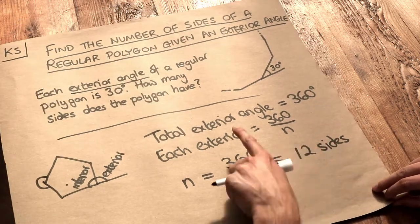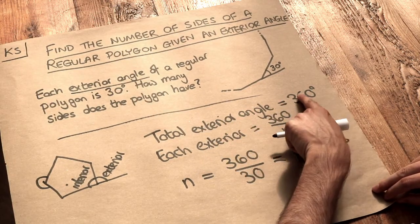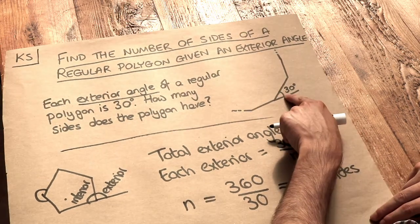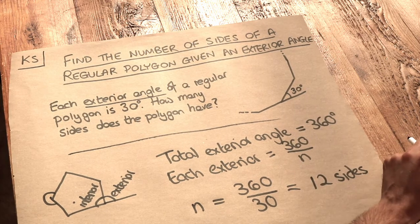And let's just check that. If we did 360, the total exterior angle, and we divided it by 12, 360 divided by 12 is 30 degrees. And indeed the exterior angle is 30 degrees.